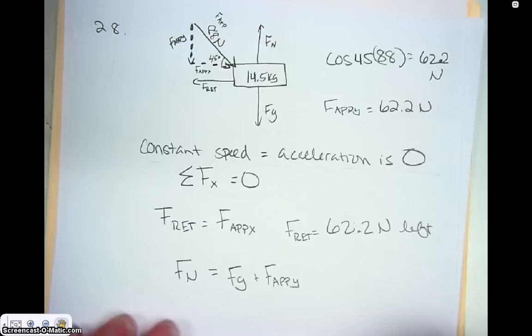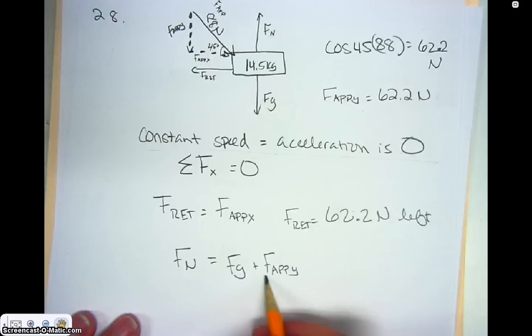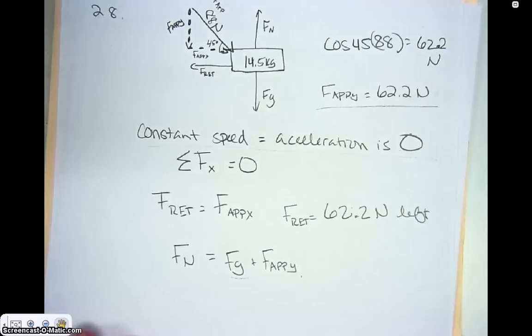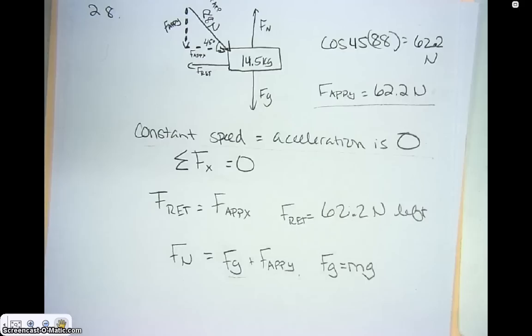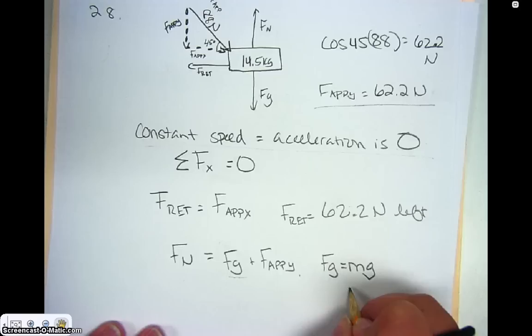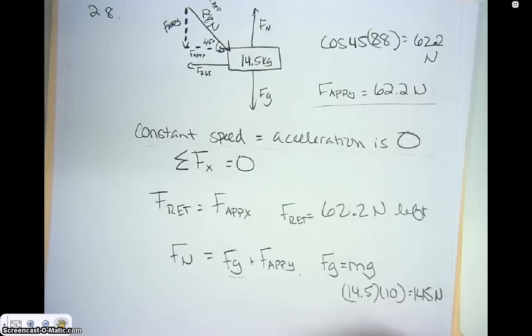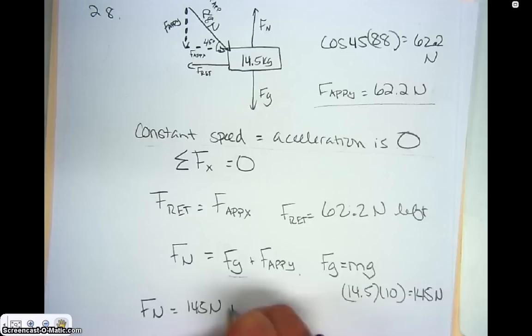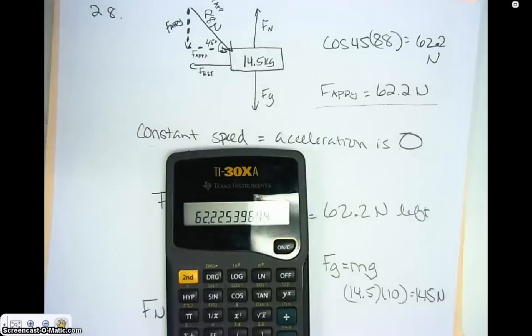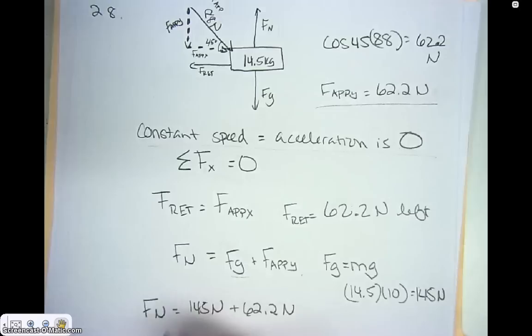To calculate those, I already have the applied y force. I need the gravitational force, which is mass times acceleration due to gravity — also known as weight — so 14.5 times 10 gives 145 newtons. Now I plug both in: the normal force equals 145 newtons plus 62.2 newtons, for a total of 207.2 newtons upward.